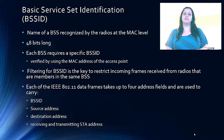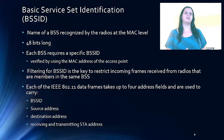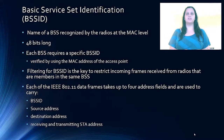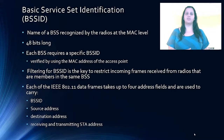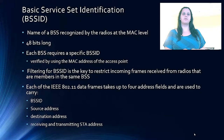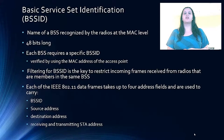Basic service set identification, abbreviated BSSID, is the name of the BSS recognized by radios at the MAC level and it is 48 bits long. Each BSS requires a unique BSSID, which is verified by using the MAC address of the access point. At the MAC level, filtering for the BSSID is the key mechanism to restrict incoming frames received from radios that are members of the same BSS.